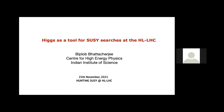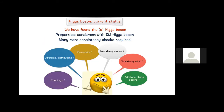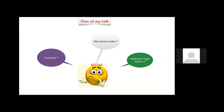This is the current situation: we have found a Higgs boson with mass 125 GeV and its properties are very consistent with the Standard Model expectation, but we would require more consistency checks. Today I'll take three points: the coupling of the observed Higgs boson, whether there are new decay modes of the observed Higgs boson, and the presence of additional Higgs bosons in the context of MSSM.